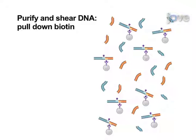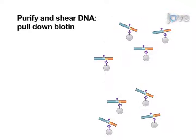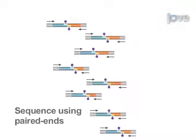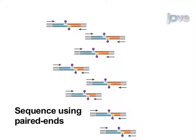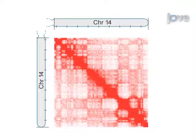The library is sheared, and the junctions are pulled down with streptavidin beads. The purified junctions can subsequently be analysed using a high-throughput sequencer, resulting in a catalogue of interacting fragments.